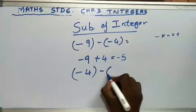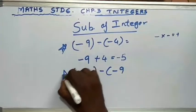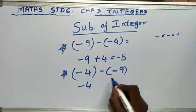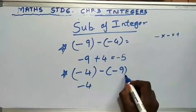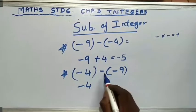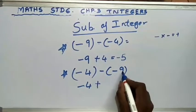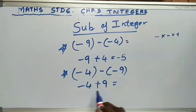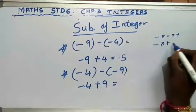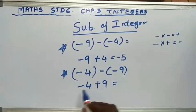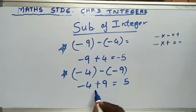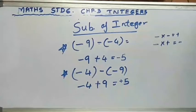Let us do another sum: minus 4 minus (minus 9). I write minus 4. I remove the bracket — when I remove it, two negative signs are there. So minus into minus is plus, then 9. Now the sum is minus 4 plus 9. Left side minus, right side plus — so minus into plus is minus, meaning subtract. 9 minus 4 is 5. Which number is greater? 9. And 9 has a positive sign, so the answer is plus 5.